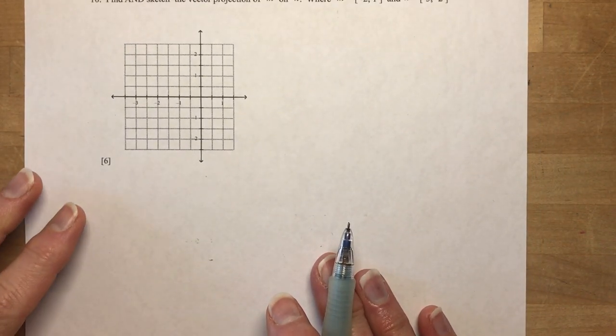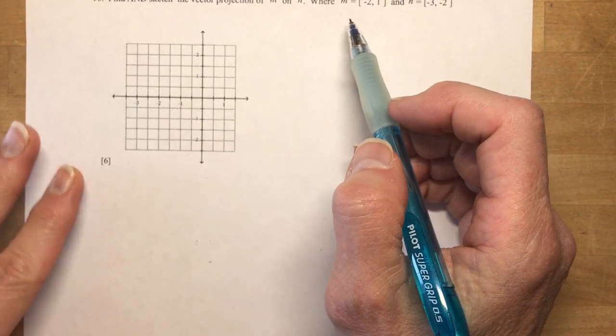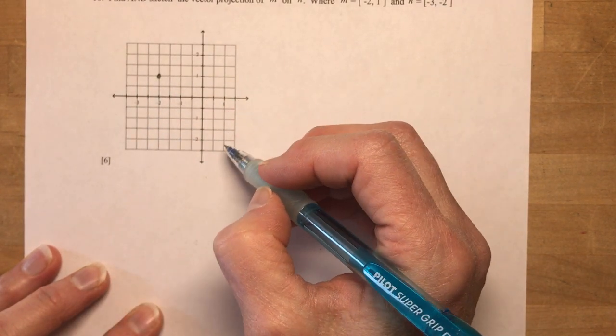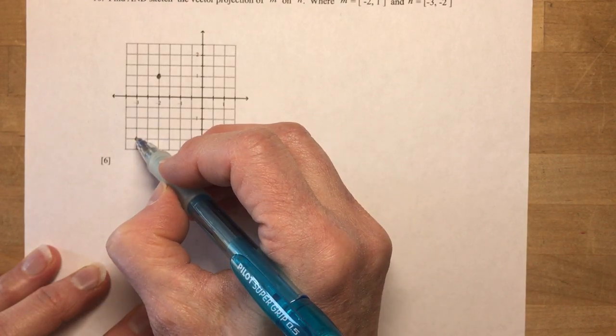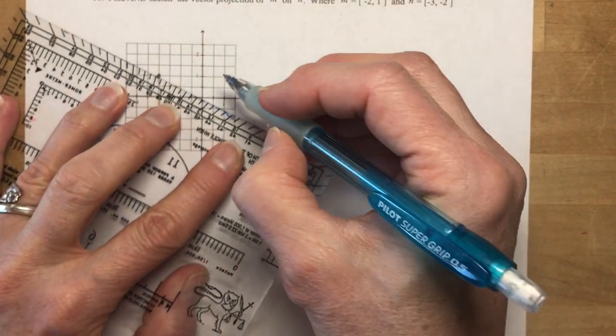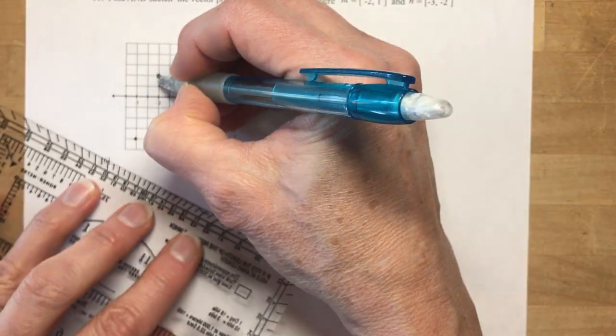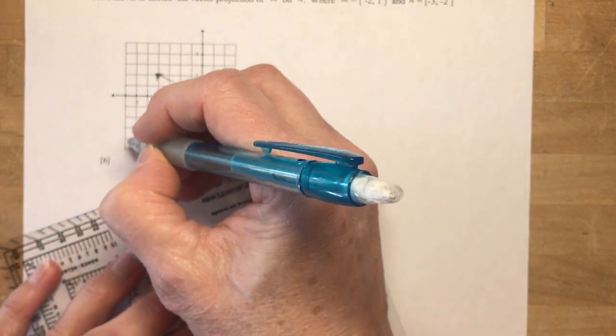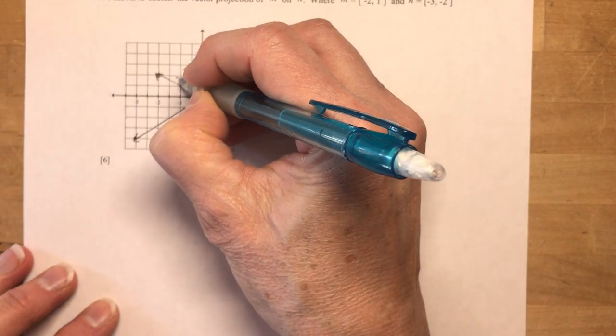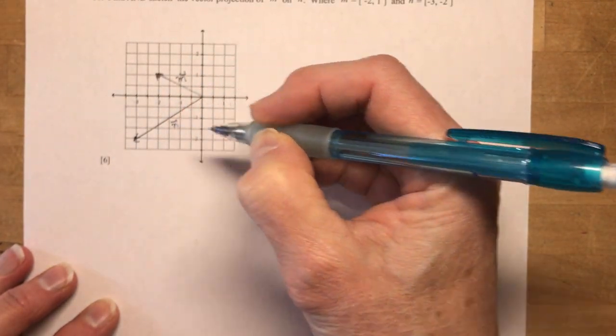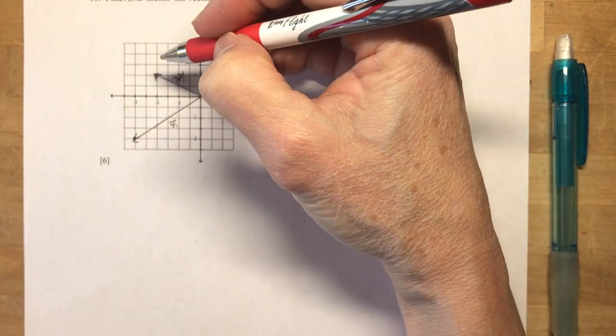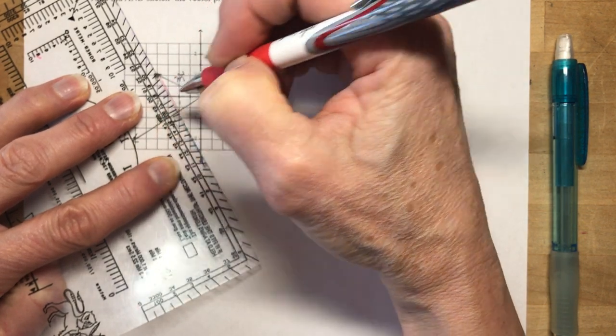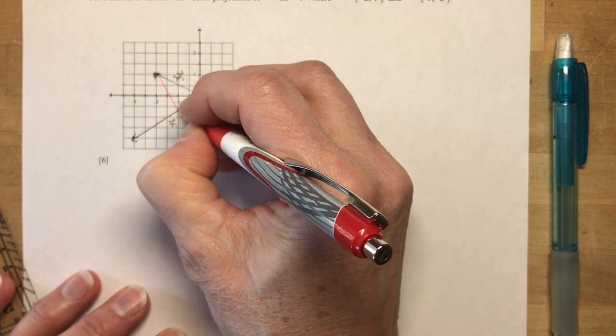And the last question, number 10. Find and sketch the vector projection of M on N, where M is minus 2 and 1, and N is minus 3 and minus 2. Okay, so let's sketch this in quickly. So we have this vector, and we have this vector here, and I'm doing M on N. So this is M, this is N. So I have to draw a perpendicular from M onto N. And it's about like this. And my vector projection is going to be right here. Don't forget to put the arrow on it. It's a vector projection.